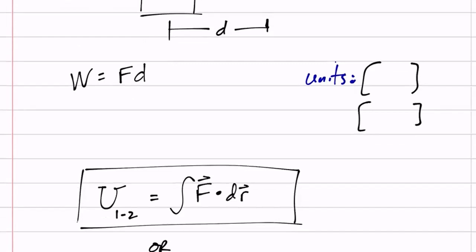We're not going to do very many integrals. But let's think about why that might work. We do an integral because maybe force isn't constant — maybe force is changing. And what about that dot product? You take the X component times the X component, plus the Y component times the Y component, plus the Z component times the Z component. That's kind of like taking the X component of force times the X displacement plus the Y component of force times the Y displacement.